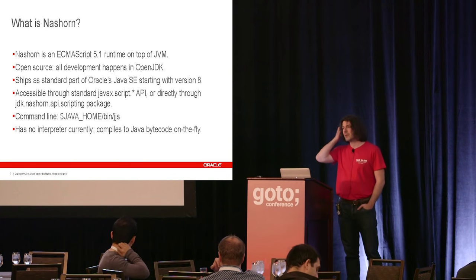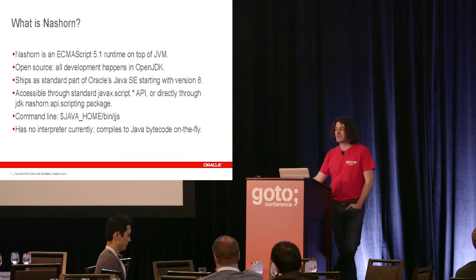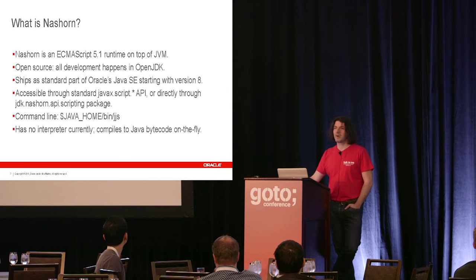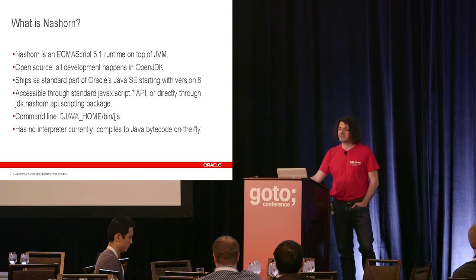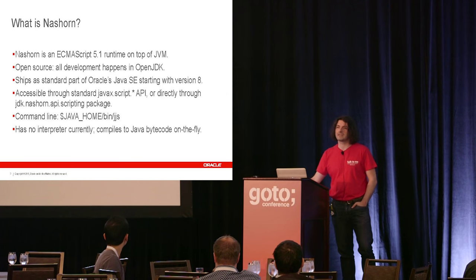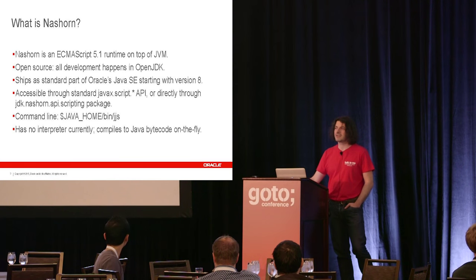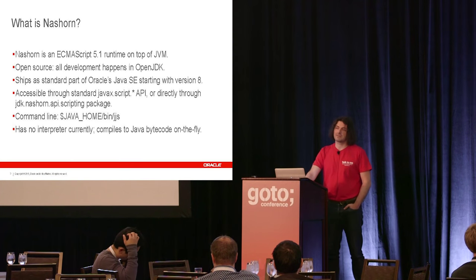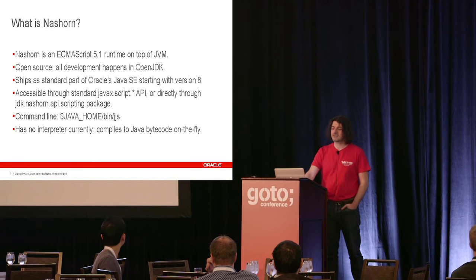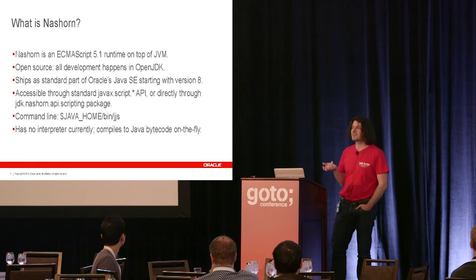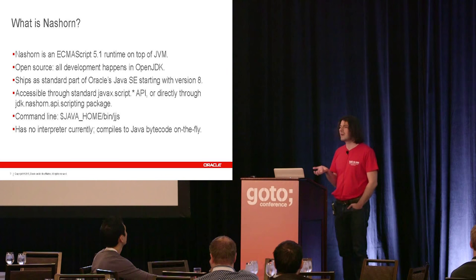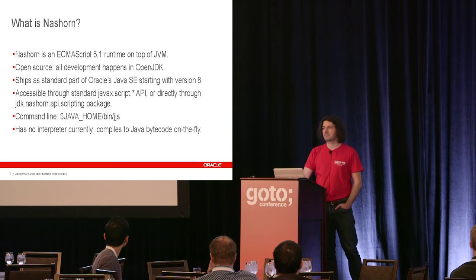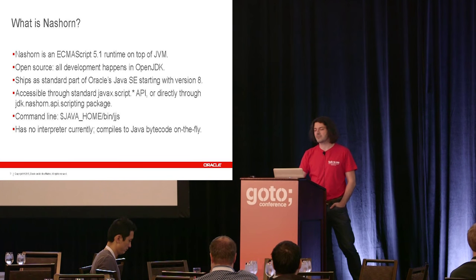Talking about Nashorn — I think by now most people know what Nashorn is. It's basically an active file-on runtime that's built on top of the JVM. It's completely open source right now, so all of the development is done in the OpenJDK. All of the code is out there in the OpenJDK repo. It does ship as a standard part of Oracle's Java Standard Edition starting with version 8.